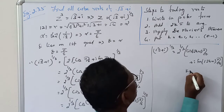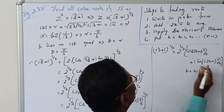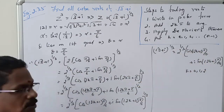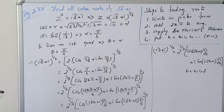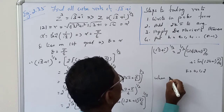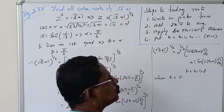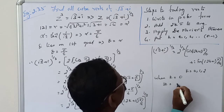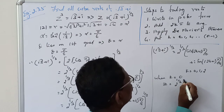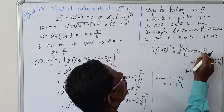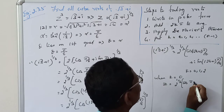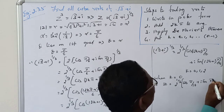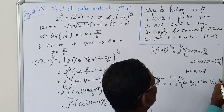Since n equals 3, k equals 0, 1, 2. When k equals 0, z equals 2^(1/3) · (cos(5π/18) + i·sin(5π/18)). When k equals 1, z equals 2^(1/3) · (cos(13·5π/18) + i·sin(13·5π/18)).